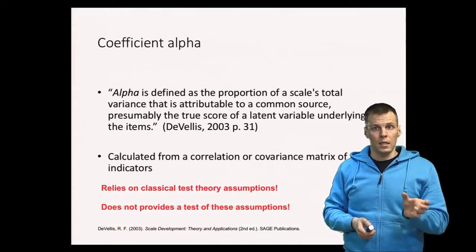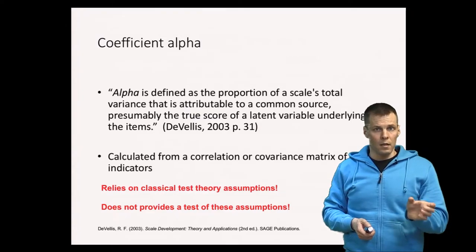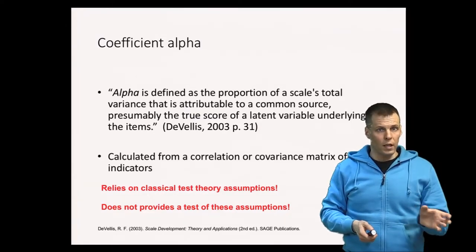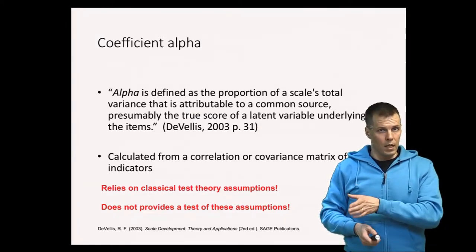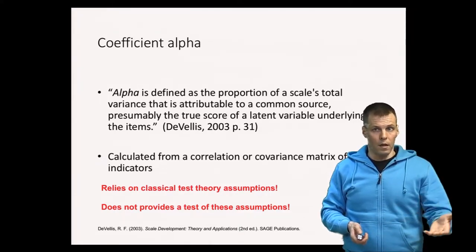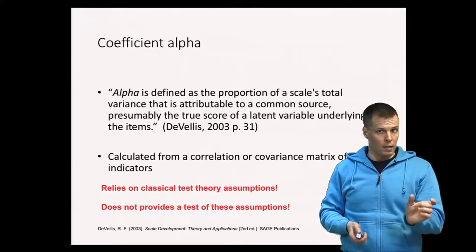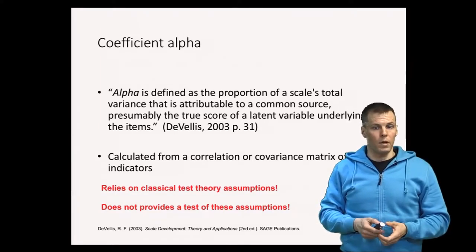The classical test theory states that the measure score X is a sum of the true score T plus the measurement error E. In Greek letters the T is tau and therefore it's tau equivalent. Every indicator has the same amount of true score variation in it. That's what the tau equivalence assumption means.